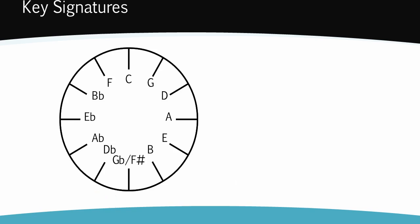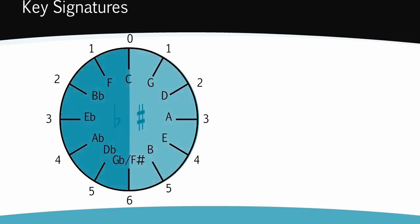Now that the circle is complete, you need to add numbers around the outside. Start with zero above the C, then add the numbers one to six down each side. These numbers tell you how many sharps and flats there are in each key signature.